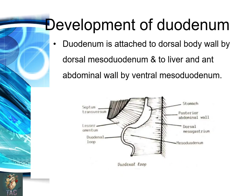Now we move on to development of the duodenum. The duodenum is attached to the dorsal body wall by the dorsal mesoduodenum, and to the liver and anterior abdominal wall by the ventral mesoduodenum. The duodenum develops from part of the foregut, part of the midgut, and also the splanchnopleuric mesenchyme surrounding this area. Developmentally the duodenum has origin from both the foregut and the midgut, and the junction lies at the level of the major duodenal papilla where the bile duct originates.